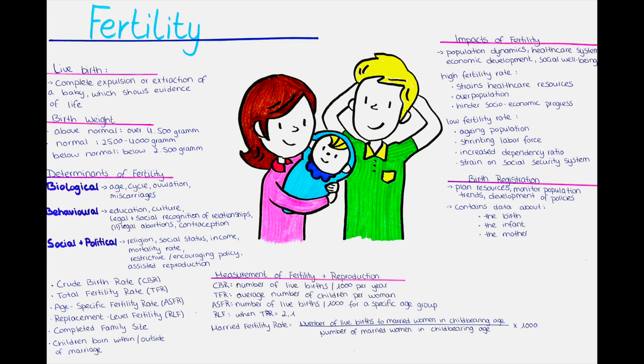Biological determinants include the age at which individuals enter and exit their reproductive years, which has a direct impact on fertility. Women have a finite window of fertility, with the highest chances of conception occurring in their 20s and early 30s. The onset of menstruation, known as menarche, marks the beginning of a woman's reproductive capacity. The age at which menarche occurs varies across individuals and populations and can influence the overall reproductive lifespan.